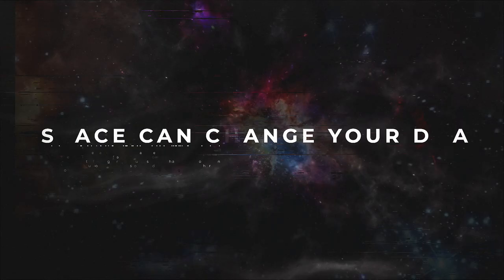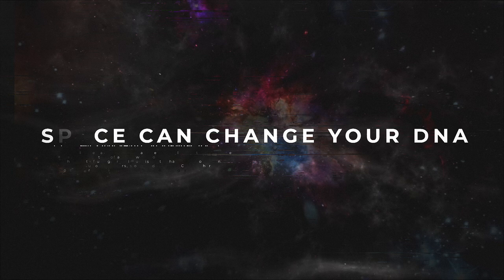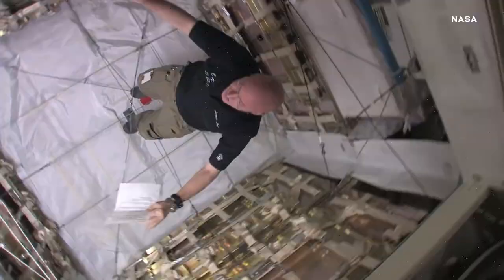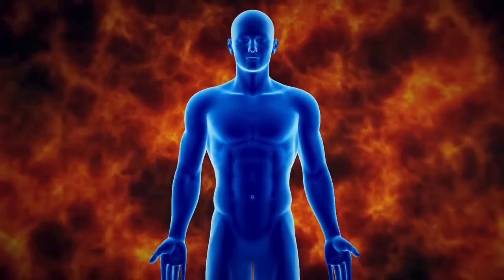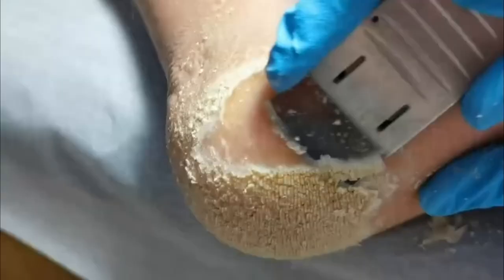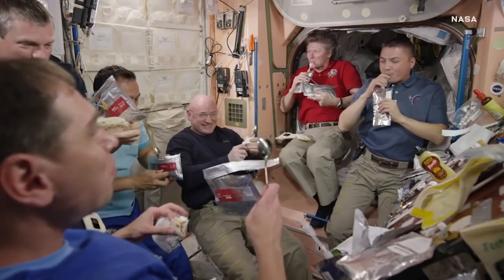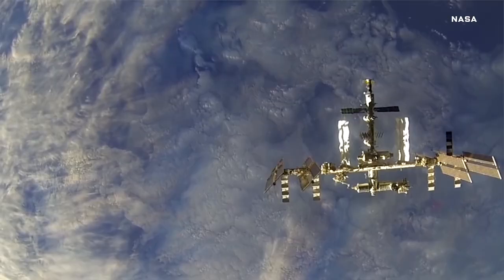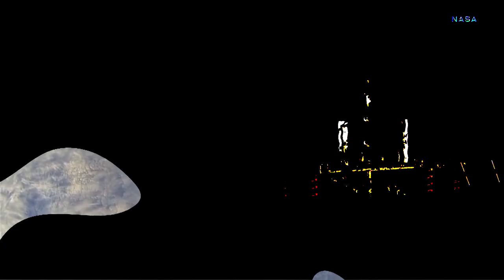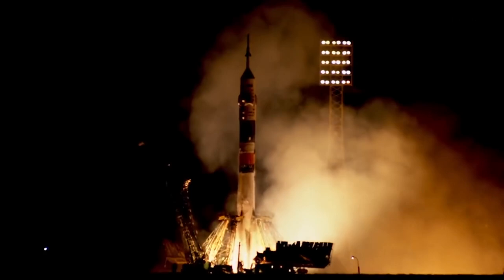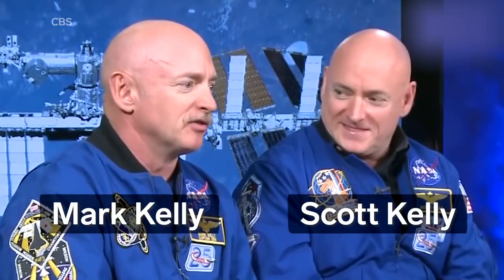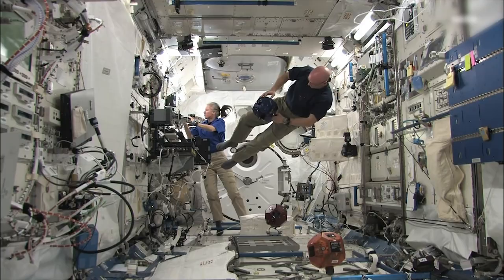Number 6: Space can change your DNA. Spending time in space can take its toll on the body. Muscle atrophy, spinal decompression, and losing calluses on your feet are only a small part of what can happen to you if you spend long enough out of Earth's atmosphere. NASA was able to determine some of the extent of this by taking a pair of twin astronauts, Scott and Mark Kelly, and running tests after one of them spent a year aboard the International Space Station.